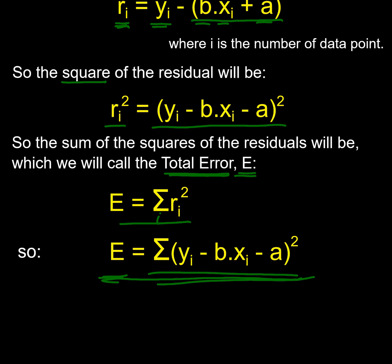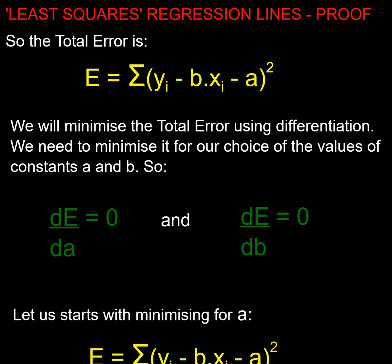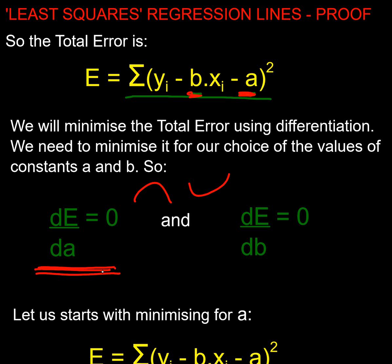So what do I want to do? I want to minimise E, and I want to minimise it by picking the b value and the a value. We know how to minimise functions in relation to a variable — we use differentiation. We need the differential to be zero because we're at a turning point. So we need the differential of E with respect to a to be zero, and also the differential of E with respect to b to be zero. We're going to do that differentiation, set them to zero, and solve.